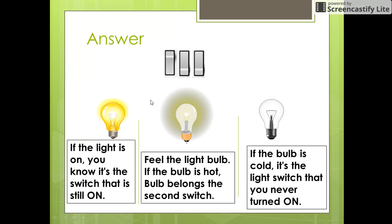Now you know very well that the first switch is on, the second switch was turned off by you after 10 minutes, and the third switch was never turned on. So when you enter the room, if the light bulb is on, you know it is the switch that was still on, that is switch number one.